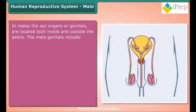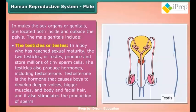Human Reproductive System – Male: In males, the sex organs or genitals are located both inside and outside the pelvis. The male genitals include the testicles or testes. In a boy who has reached sexual maturity, the two testicles produce and store millions of tiny sperm cells. The testicles also produce hormones, including testosterone.